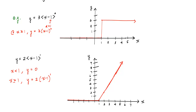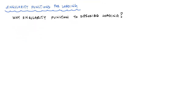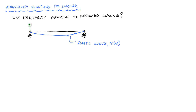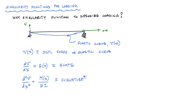Now that you understand what a singularity function is, you need to understand why we want it to describe loading. Consider a simply supported beam — the deflected shape is the elastic curve, v of x. The derivative of the elastic curve is the slope, and the derivative of the slope is the curvature. From the double integration method, the curvature is also described by the moment function divided by EI. People often start with a moment function for the entire beam using singularity functions and then integrate twice to get the displacement shape.